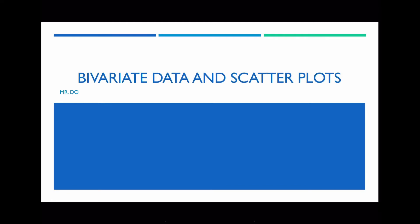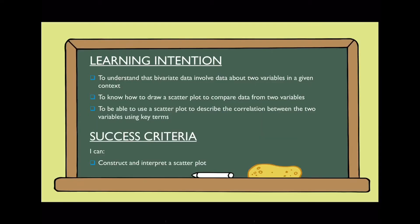Hello class. In this video we're going to be looking at bivariate data and scatter plots. The learning intention of this video is we're going to understand that bivariate data looks at two separate variables in a given context. We're going to know how to draw scatter plots to compare data from these two variables. And lastly, we're going to be using these scatter plots to describe the correlation between the two variables using key vocabularies.